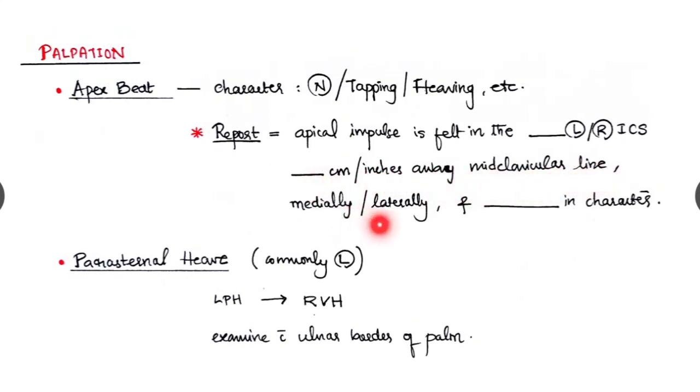And parasternal heave we have to look. If it is present, it will be left side, left parasternal heave. Left parasternal heave is suggestive of right ventricular hypertrophy, and we have to examine it with the ulnar border of our palm.